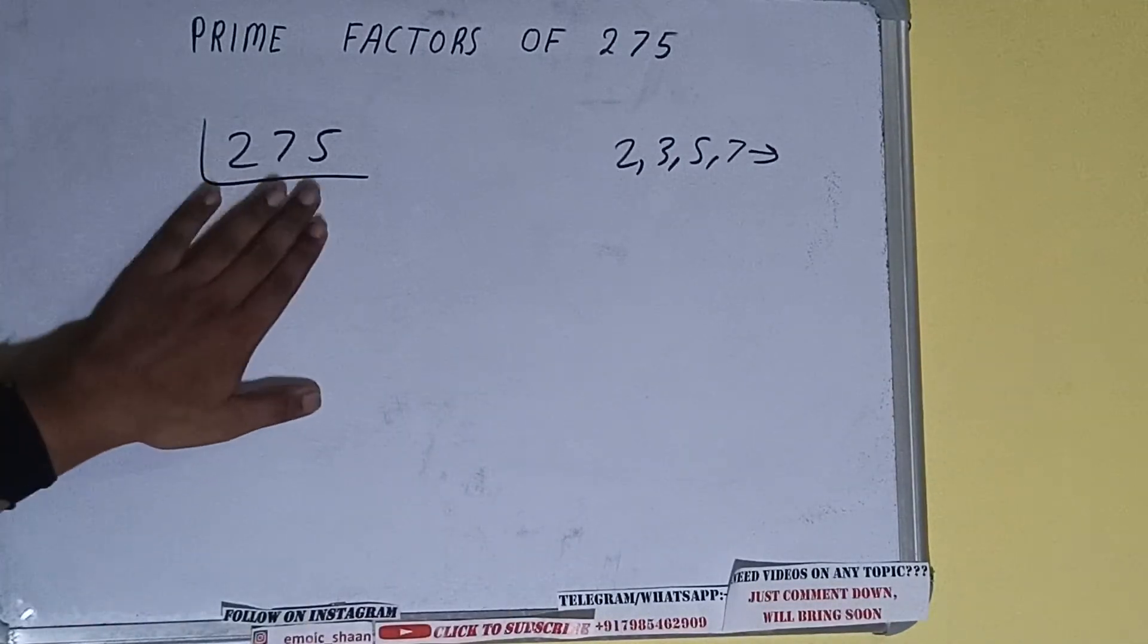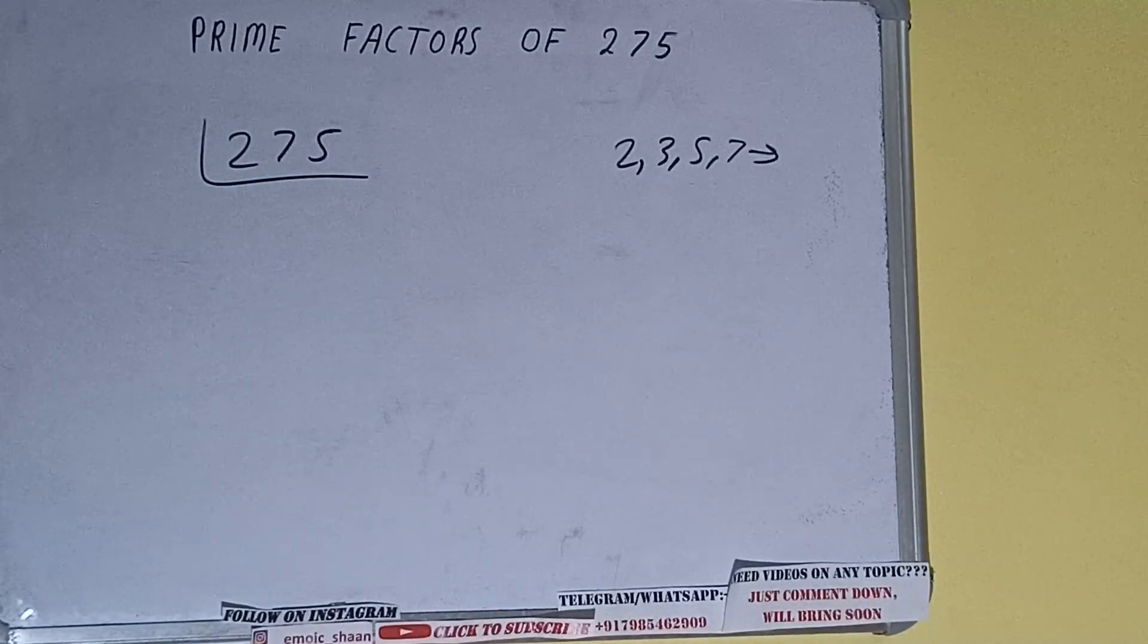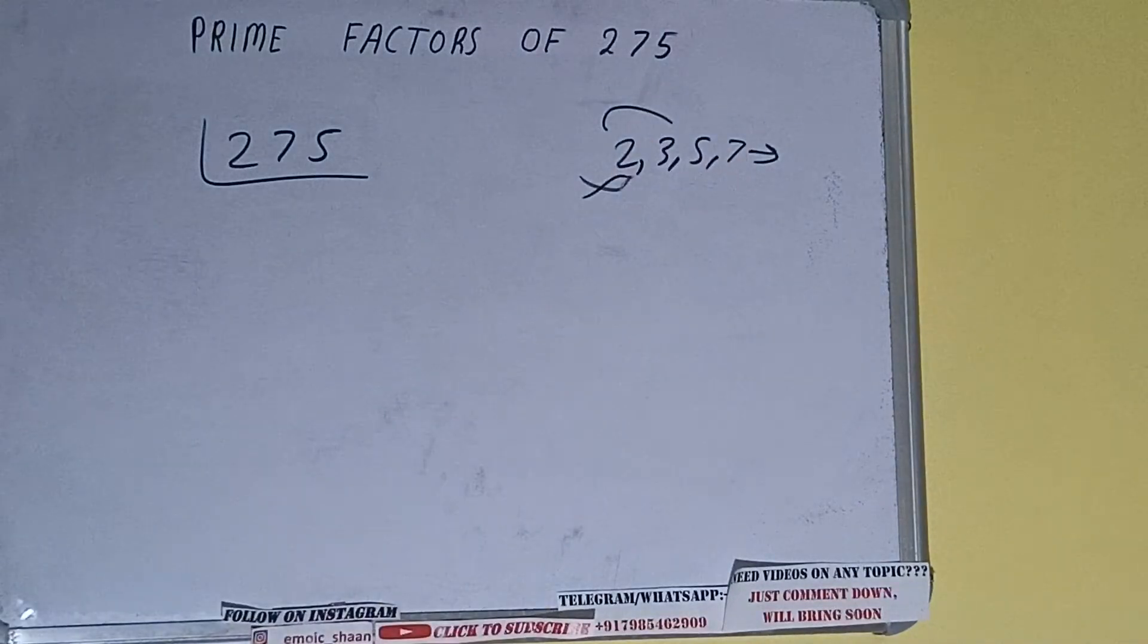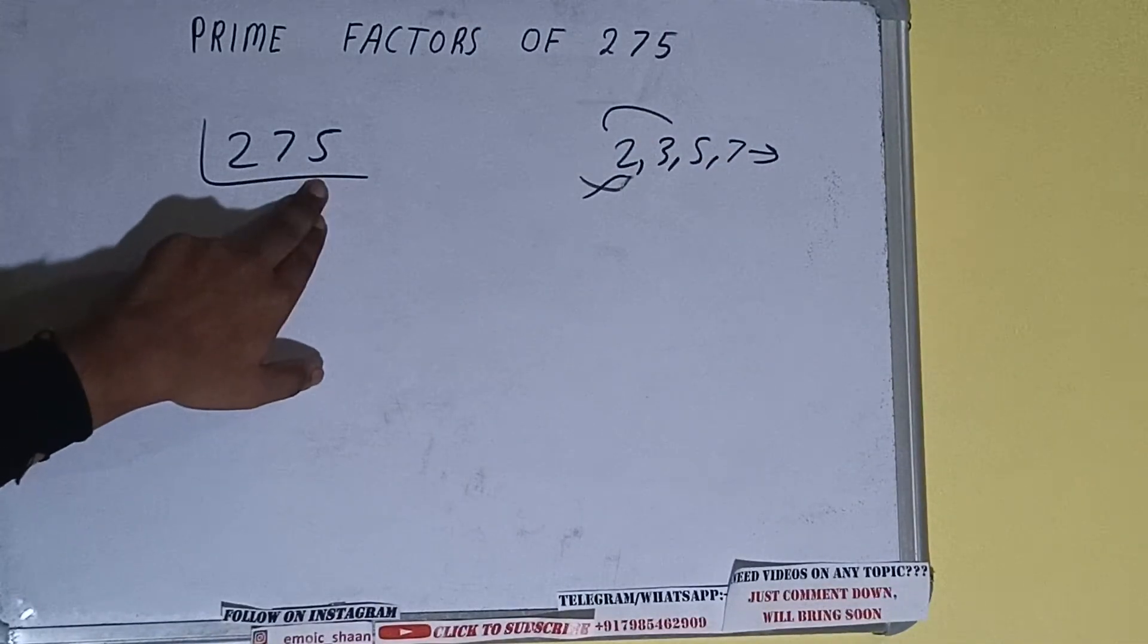That is two. Is the number 275 divisible by two? It is not because the number is odd. So we'll check with the next lowest prime number, that is three. Three nines are 27, three ones are three, two left. It is not divisible by three also.